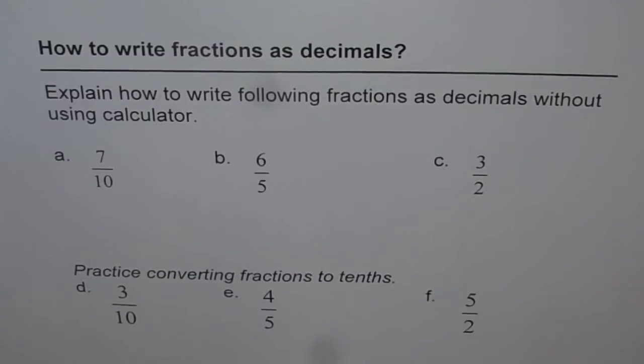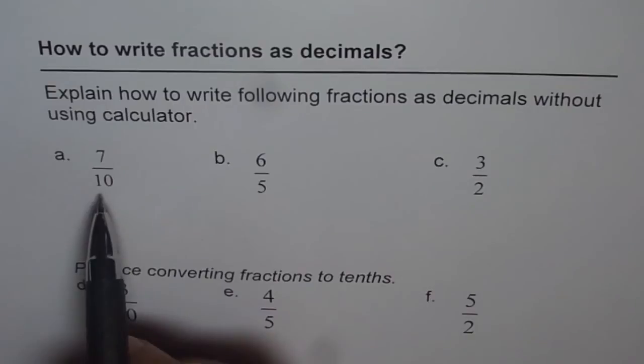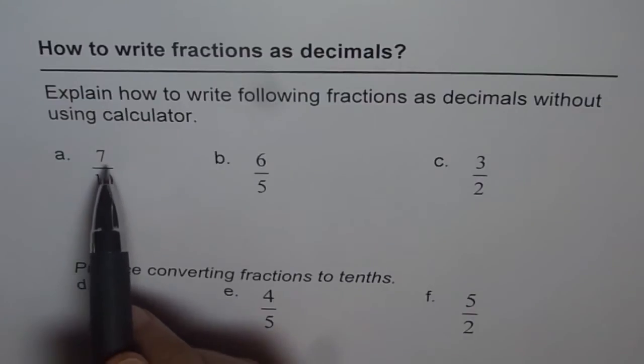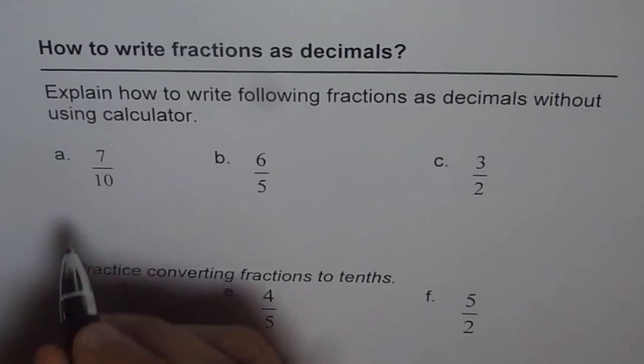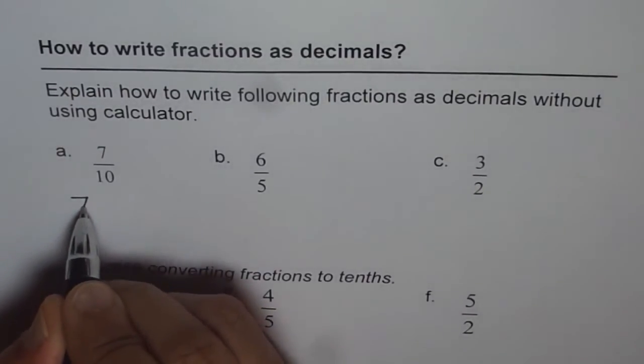Well, look at it carefully. We got a number like 7 out of 10, that means 7 tenths. 7 out of 10 is 7 tenths, right? You read this as 7 tenths.